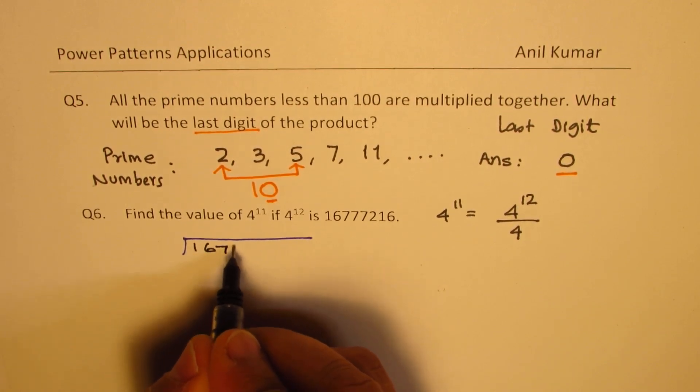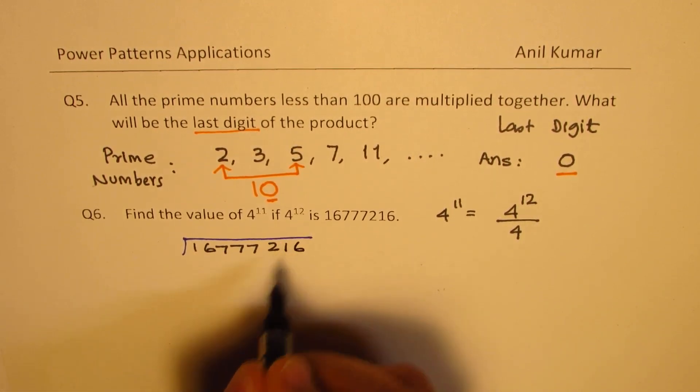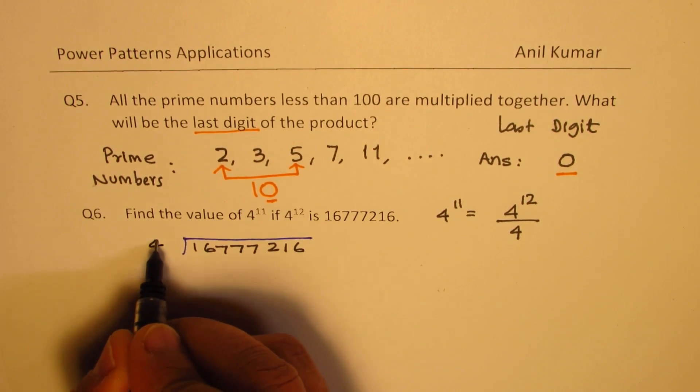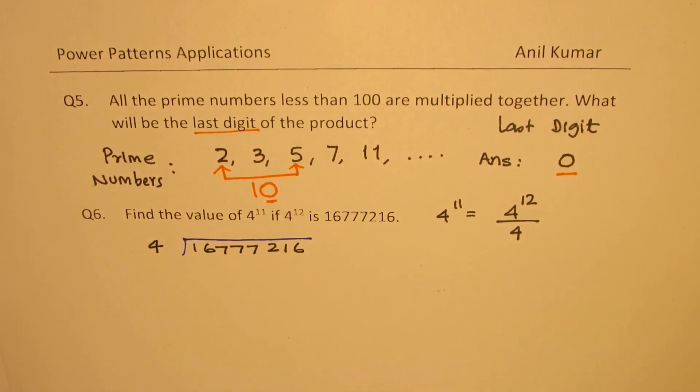We have 1, 6, 7, 7, 7, 2, 1, 6. And we are going to divide this by 4. So let's do it.